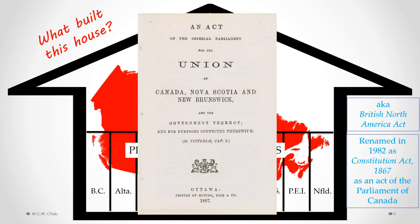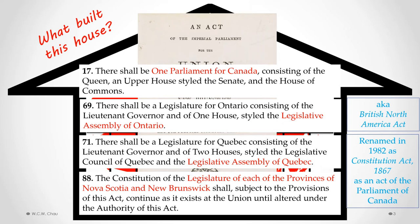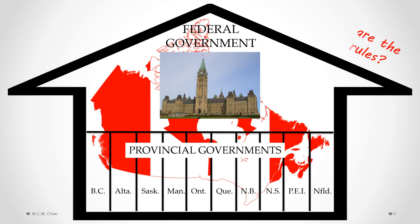There are specific sections that created these different governments. Section 17 created the Parliament for Canada, and there are three other sections which created the legislative assemblies for each of the four original provinces: Ontario, Quebec, Nova Scotia, and New Brunswick. Now that these governments have been created by the Constitution Act 1867, we need to look at what are the house rules — what are governments able to do or not do.